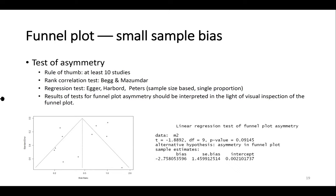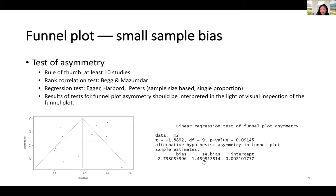Applying the test to our tuberculosis example, we get a funnel plot that looks roughly symmetric, even though there is perhaps one study at the high-precision end that is closer to a risk ratio of one. When we apply the Egger's linear regression test, the test is insignificant.